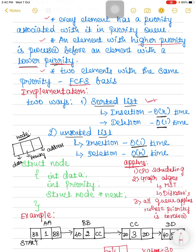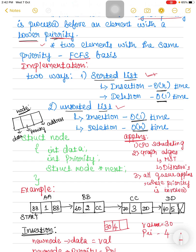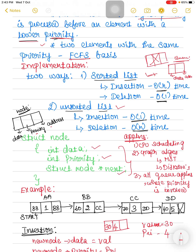You can follow either approach — sorted or unsorted list. The example I am going to discuss uses a sorted list, where insertion takes O(n) and deletion takes O(1). The difference between a normal queue node and a priority queue node is that in the priority queue, each node has three fields: the first field stores the data, the second field stores the priority, and the third field stores the address of the next node.